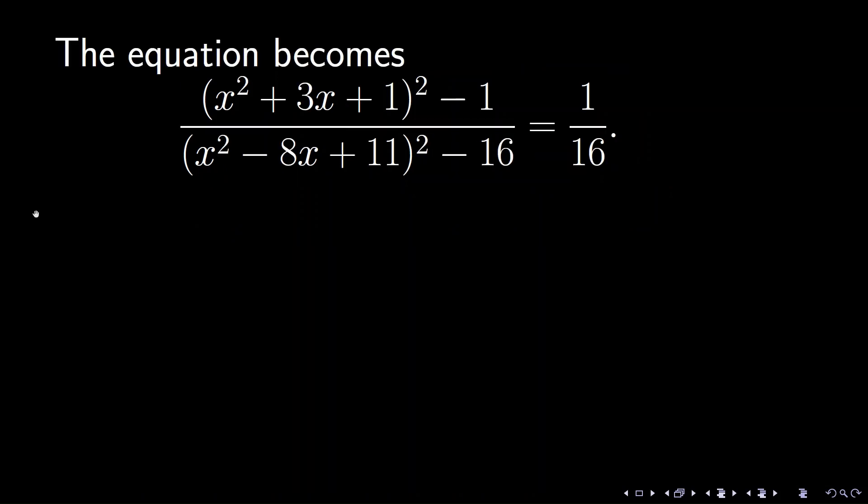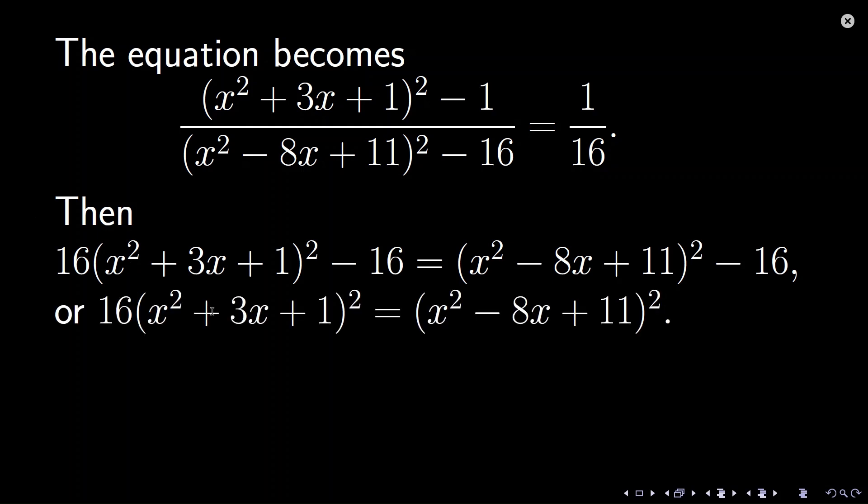Plug in the original equation. Both the numerator and the denominator are differences of squares. Cross multiplication: 16 times the numerator equals 1 times the denominator. Cancel out negative 16. We have perfect squares on both sides.